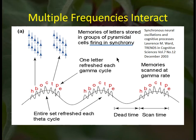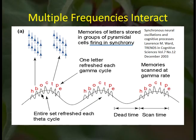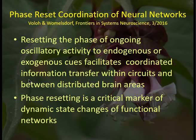The nesting of EEG rhythms — with slower frequencies organizing the activity of faster frequencies — has been well documented in multiple research studies, and it's been demonstrated that this coordination is responsible for much of what we are able to do in terms of cognition and information processing. The resetting of the phase of ongoing oscillatory activity to endogenous or exogenous cues facilitates coordinated information transfer within circuits between distributed brain areas. Phase resetting is a critical marker of dynamic state changes of functional networks.